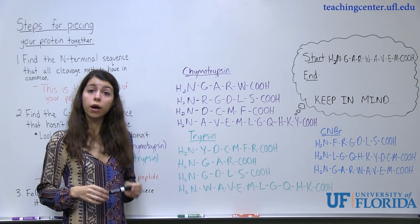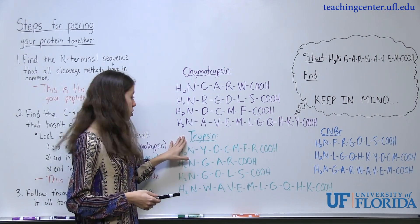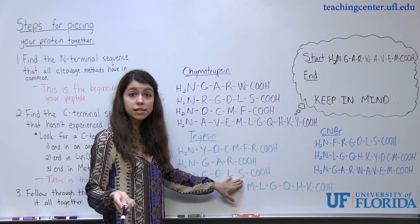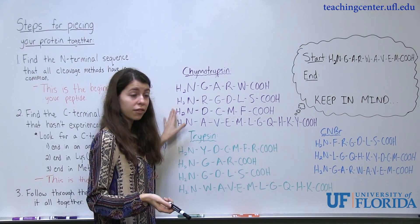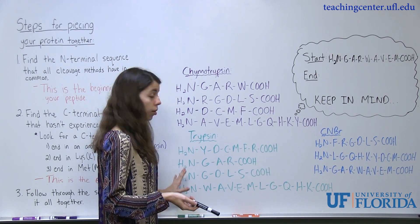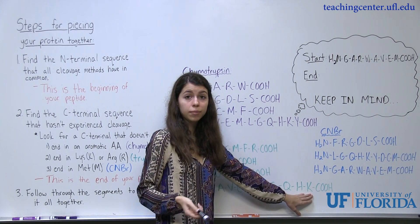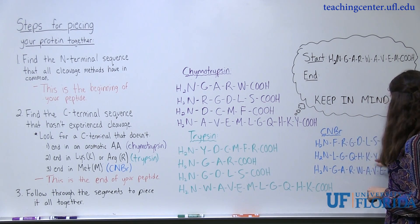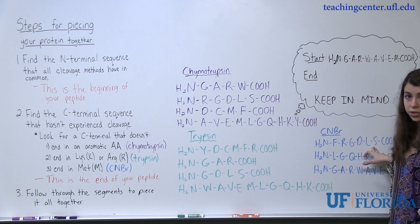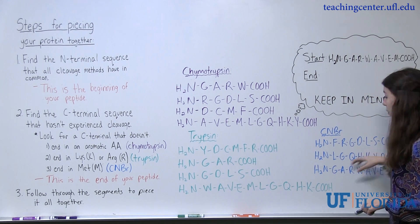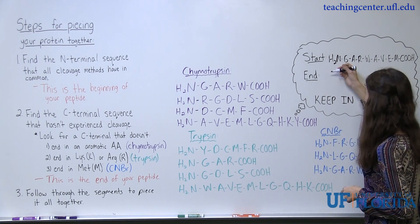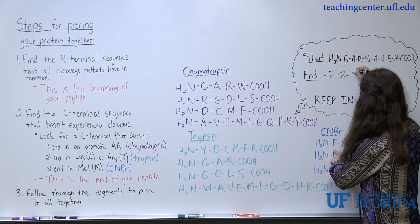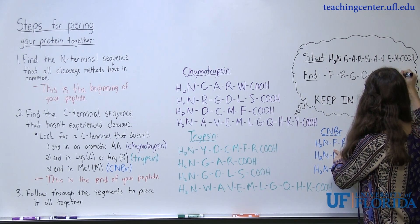If you're unsure, you can go to each of your other mechanisms and confirm. Looking at trypsin's cleavage patterns, we can see it cleaves at arginine — and another arginine. This serine, because it's not an arginine or lysine, wouldn't have been a cleavage point. So it's safe to say this is the end of our amino acid sequence, our carboxy terminal end. The lysine confirms it was cleaved because it ends in a lysine. For cyanogen bromide, we look for sequences that don't end in methionine. We have a methionine here and a methionine here, but a serine here. All of these sequences share GDLS in common, so this is going to be our end sequence: F, R, G, D, L, S, COOH.